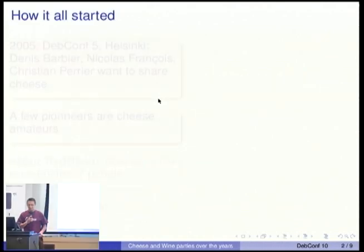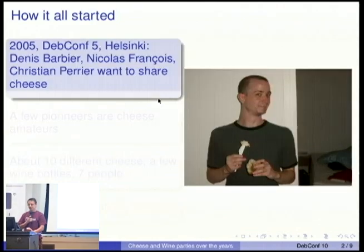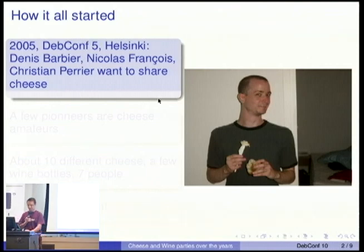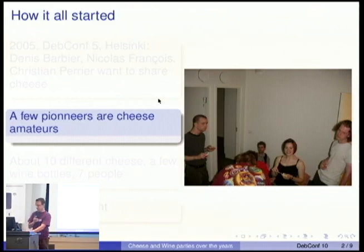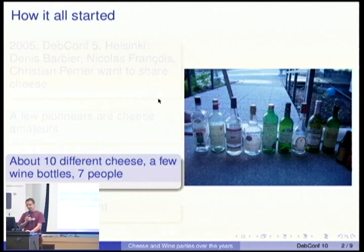This cheese and wine stuff — how it all started. It started back in 2005 in Helsinki. A few pioneers, among whom was Matt Zimmerman, just wanted to share some cheese with friends. All of these pioneers were cheese amateurs. You can recognize Matt, Mako, Anna, Moray. We ended up with ten different cheeses, a few wine bottles, and seven people — though there were many more people at the end. Of course, we had quite a long night.